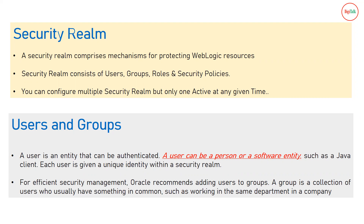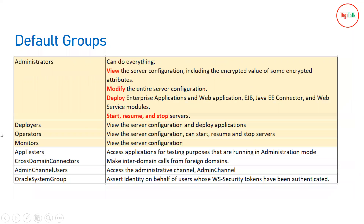A group is a collection of users who usually have something in common. You can create a group and assign a particular role to that group — for example, an operators group. Rather than assigning a role to each and every user individually, you add users to the group and they all inherit that role. A group is essentially a set of privileges assigned to multiple users at once.